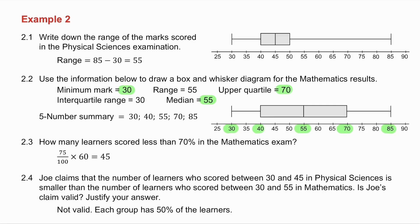They then say to you, with physical sciences, from 30 to 45, and with mathematics, from 30 to 55, and Joe claims that the number of learners in physical science is smaller than the number of learners in mathematics. Now that distance is smaller than that distance. But remember in a box and whisker diagram, 25% of your data lies in each quartile. So that is 50% of my data. Here is also 50%. In other words, his claim is not valid because each group has 50% of the learners.